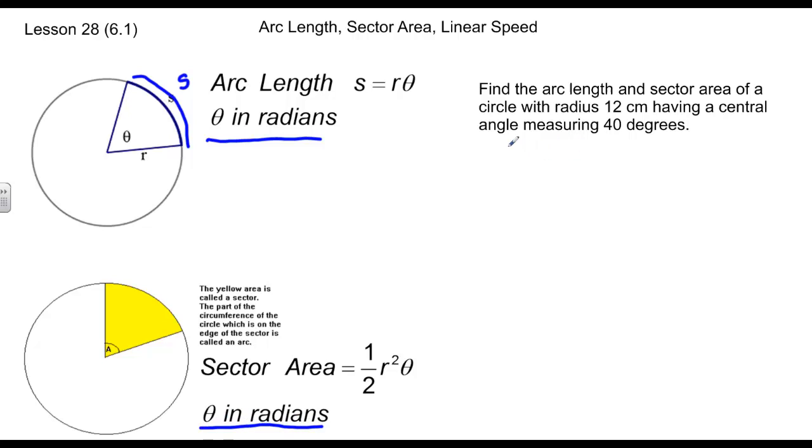So if we have a problem like this, we'll find the arc length and sector area of a circle with radius 12 centimeters, having a central angle measuring 40 degrees. This is our problem. We can't have a degree measure in order to calculate either arc length or sector area, so we need to convert.